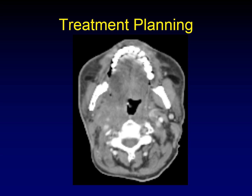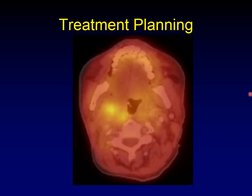PET-CT can be useful in treatment planning for radiation oncology. When there is a vague area of residual disease versus scar tissue through the neck — very hard to tell where the tumor ends and treated disease begins — overlaying a PET makes it much easier. You can definitively see which part of the mass houses viable tumor, allowing precise radiation targeting.